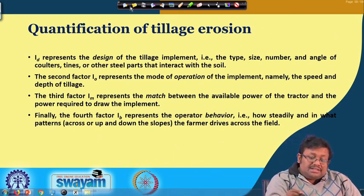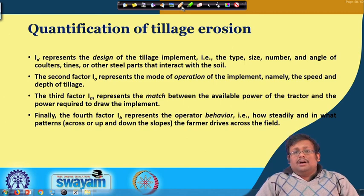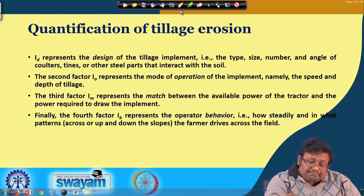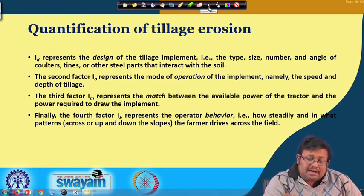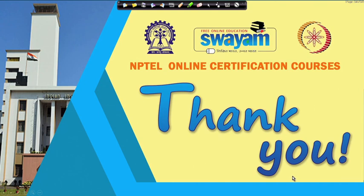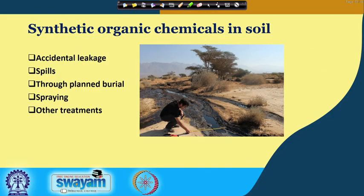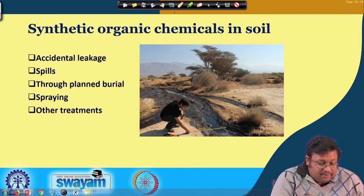There are several models available that you can search online to learn more details. Let us now wrap up wind erosion and tillage erosion and move to our final topic of this week: toxic organic chemicals in soil. There are several ways through which toxic organic chemicals can be present in the soil — accidental leakage, spills, plant burials, spraying, and other treatments. You can see here an accidental spill of crude oil or petroleum in an area in Israel as an example.